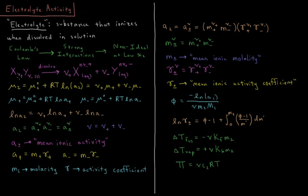For sodium chloride (NaCl), ν+ = 1 and ν− = 1, so ν = 2. For a salt where the coefficients differ, such as 1 and 2, ν would be 3 — just the sum of the coefficients. The activity of the cation equals its molality times its activity coefficient, a+ = γ+ m+, and for the anion, a− = γ− m−, where m_i is the molality and γ_i is the activity coefficient of species i.